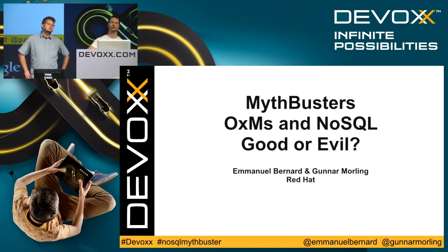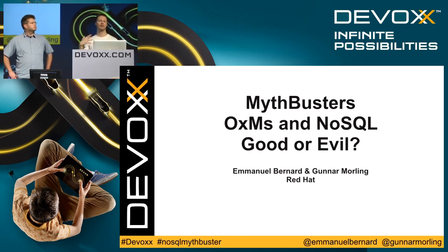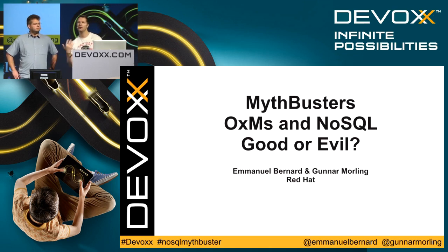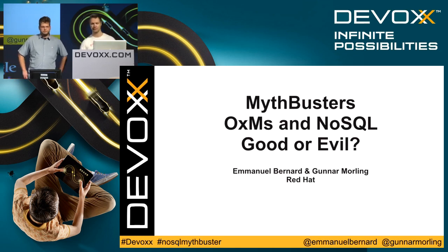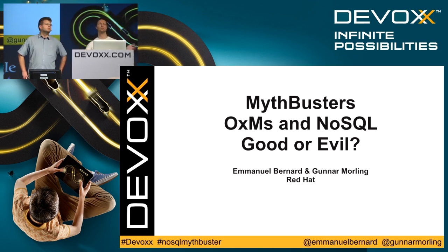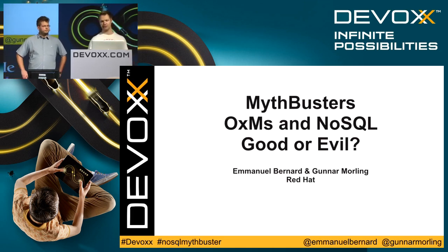Today we're going to talk about object-relational mapper with the 'relational' in quotes, because it's not about relational databases and NoSQL, and whether or not they mix together. Our experience comes from Hibernate OGM, which tries to store data into non-relational stores. But a lot of other ORMs have actually popped up for each of those different NoSQL products.